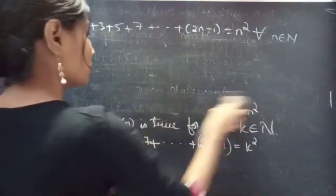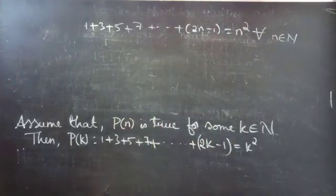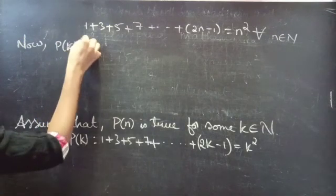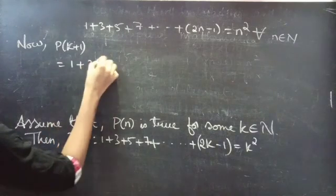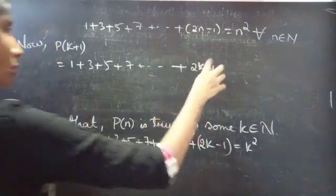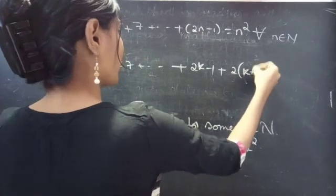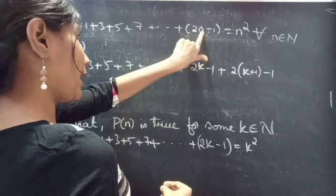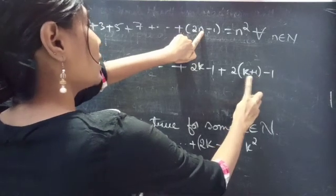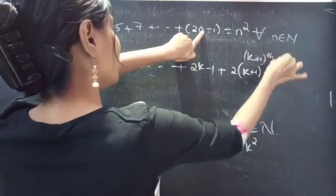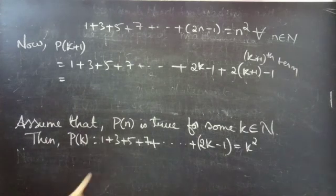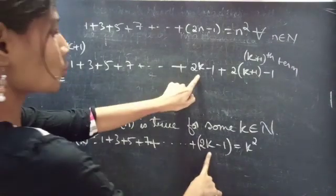Consider the sum of k plus 1 terms. P of k plus 1 equals 1 plus 3 plus 5 plus 7 plus so on plus the kth term, which is 2k minus 1, plus the (k+1)th term. By simply replacing n by k plus 1 you will get the (k+1)th term. We already have 1 plus 3 plus 5 plus 7 plus so on plus 2k minus 1 equals to k squared.